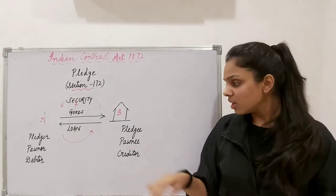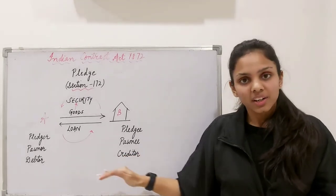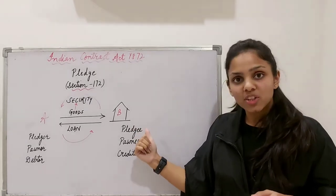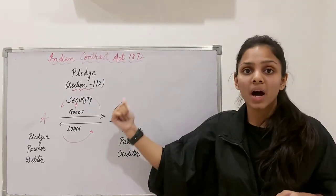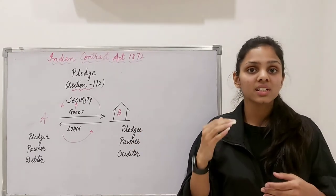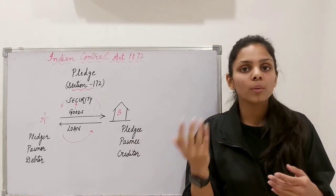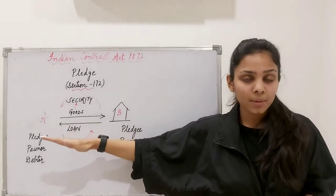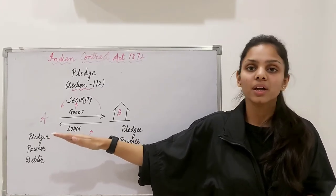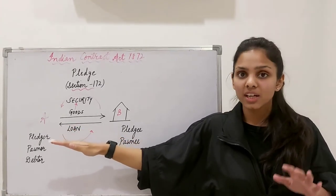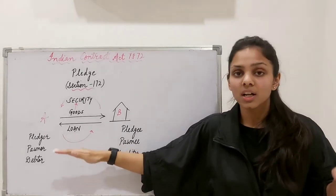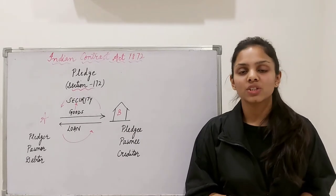One more term used here: creditor and debtor. A creditor is one who gives credit — here the one who gives credit is the pledgee, which in this case is the bank. So the bank is the creditor — it is crediting money to you. And the person who has a debt — on whom the debt is — is called the debtor. Here the debt is with the pledger. He pledged his goods because he has a debt — he is under a debt, hence called a debtor. That is why he has pledged his goods as a security.